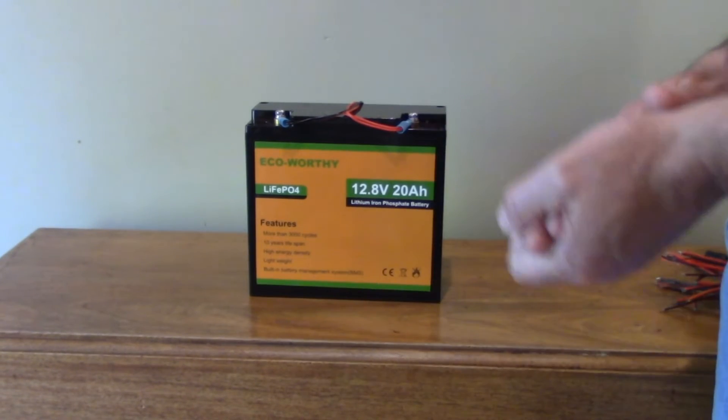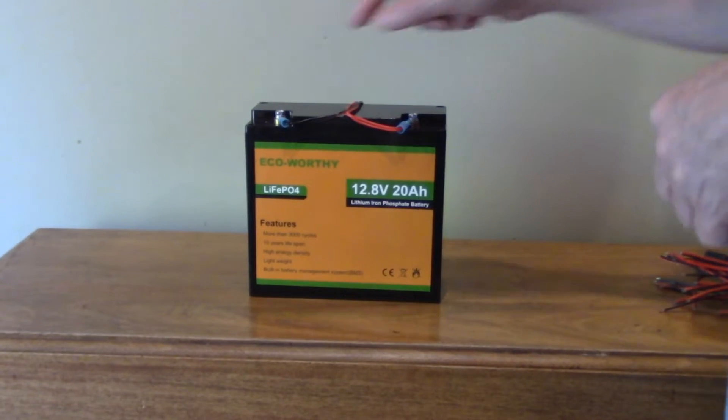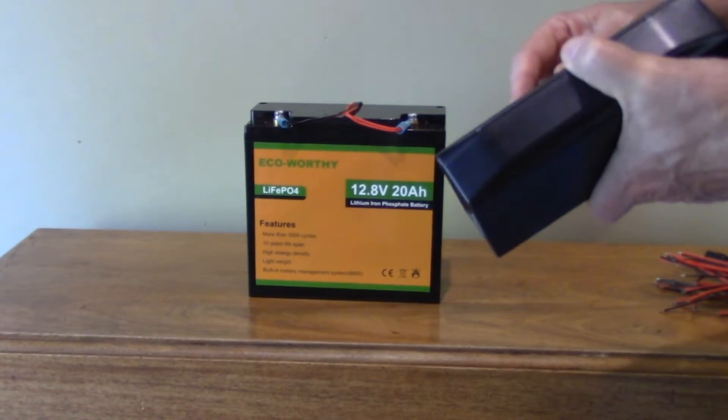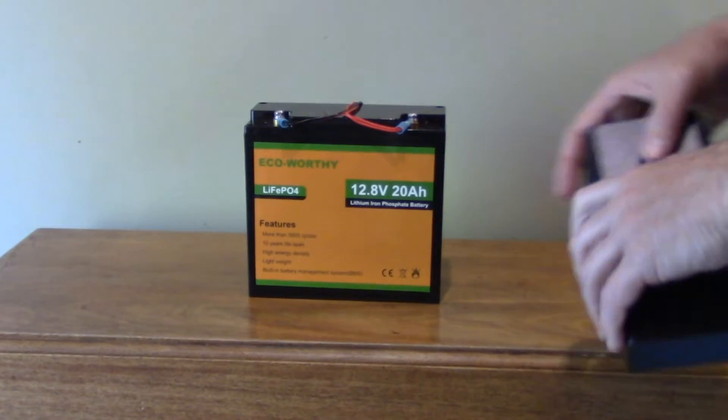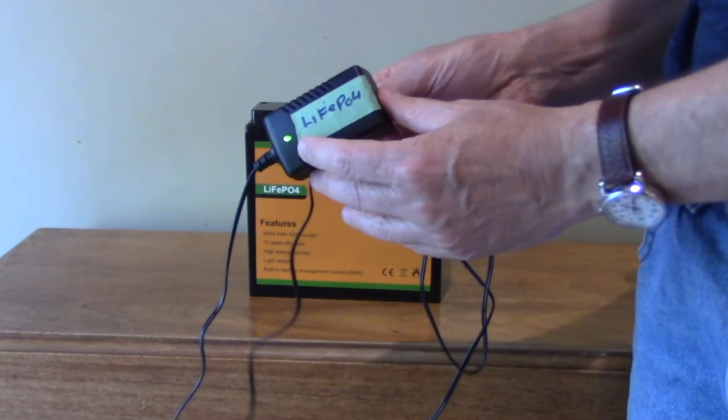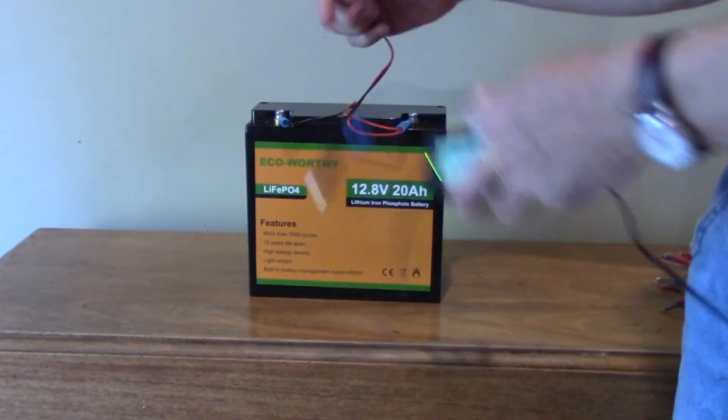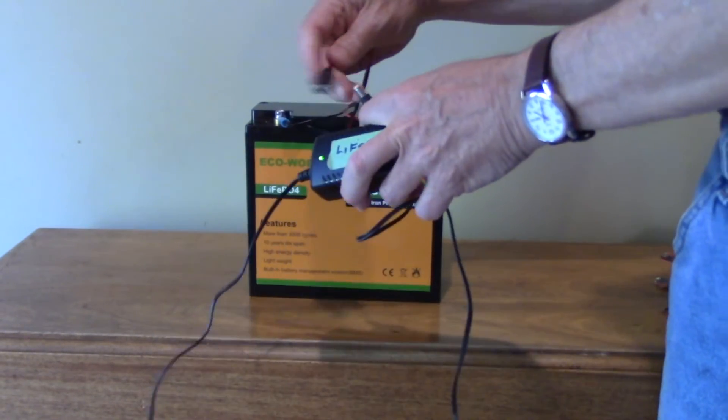Now, to charge it, you are going to need a lithium iron phosphate charger. When I bought this one, it came with, I believe, a 1 or 1.5 amp and I've just been using that. And here it is right here and then I put a little tag on that says it's for lithium iron phosphate and then I just simply plug it in and charge it.